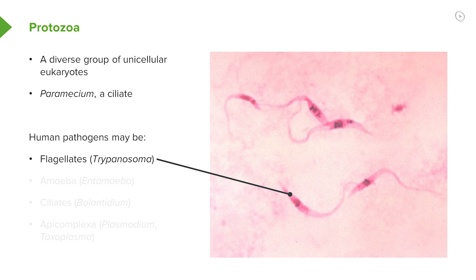Many human pathogens happen to be protozoans. For example, as shown in this photograph, there are flagellated protozoans that cause human disease — the trypanosomes, the agents of sleeping sickness.